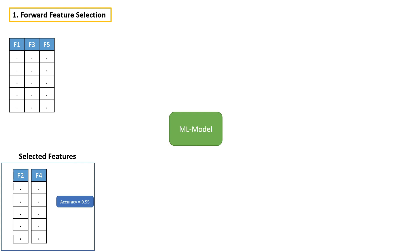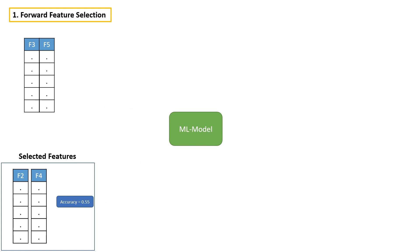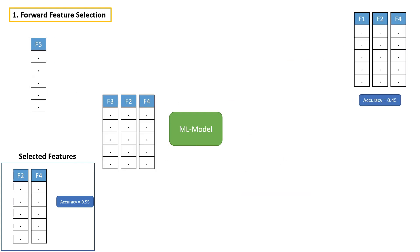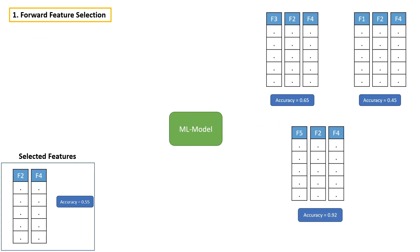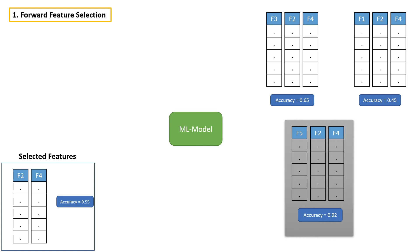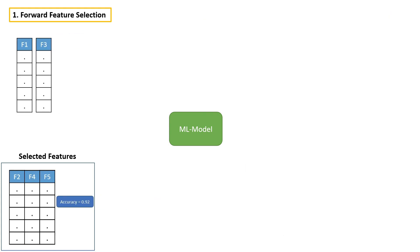In the same way, we have to repeat the process again. This time, combining feature five, two, and four gives us 92% accuracy. So the next best feature is feature five. Let's add it to the selected feature list.